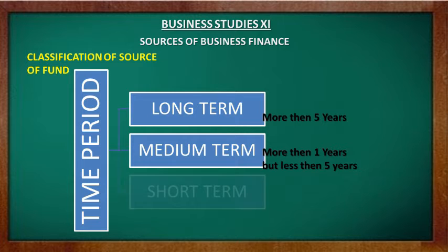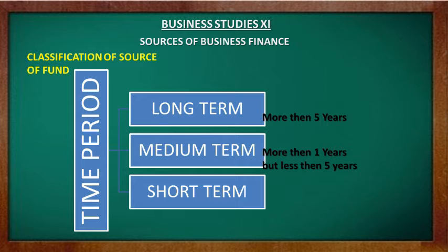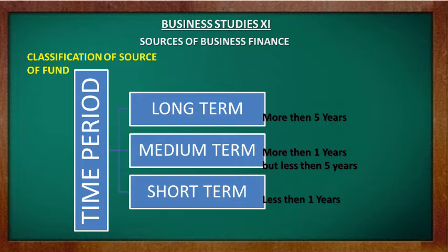Short-term sources fulfill the financial requirement for a period of one year. They are used to finance current assets like purchasing of inventories, to build stock levels for anticipated demands, payments to creditors, or to meet day-to-day expenses. Usually wholesalers and manufacturers need larger amounts of short-term funds than retailers. Examples include trade credit, bank loan, and commercial papers.